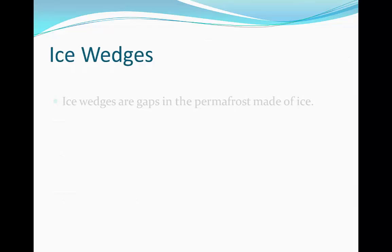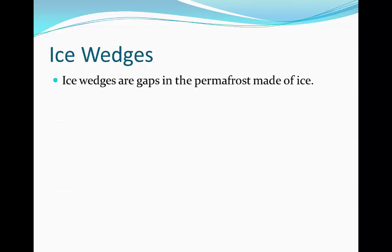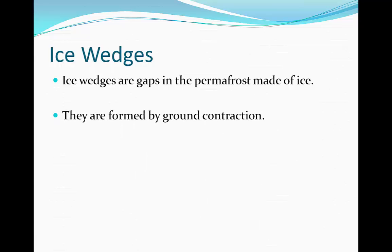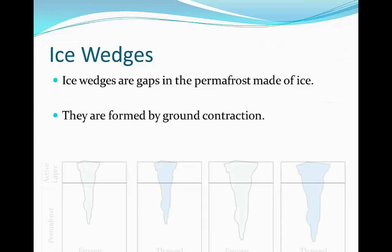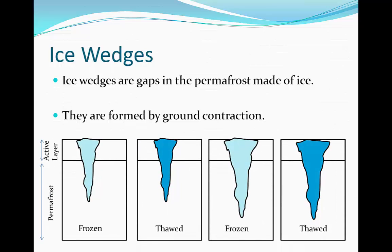Ice wedges are gaps in the permafrost made of ice. They are formed by ground contraction, and this is what they look like. Now we're going to explain the process of these in a minute, so be sure to copy this diagram down so you'll know how to explain them.